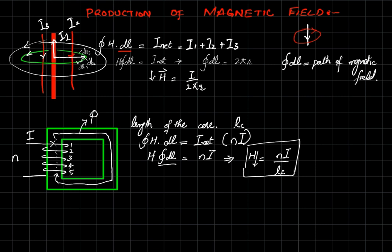To maintain the magnetic field intensity when the core length increases, we either increase the number of turns or increase the current. Up until now, there is no information about which type of material the core is made of — it may be a ferrite core or silicon steel core. To understand the effect of the core material, we need to introduce a new quantity: magnetic flux density.